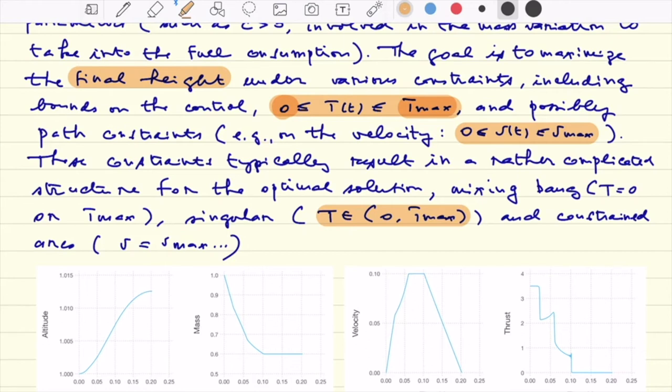Just to finish this short introduction and motivation by Goddard, we see here a result of the numerical computation. So we have altitude H. So this is H again. We have the mass here. We have the velocity here and the control T here.